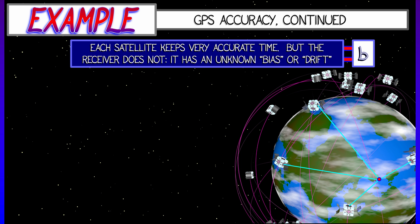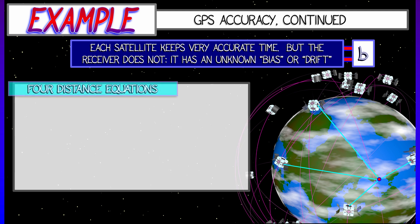Now one problem is your phone doesn't have accurate time. It can measure the passage of time accurately, but it doesn't know exactly what time it is right now. There's some unknown bias or drift. We'll call that variable b for bias.